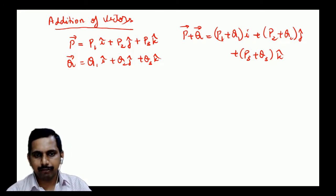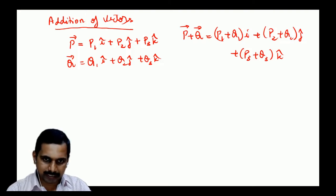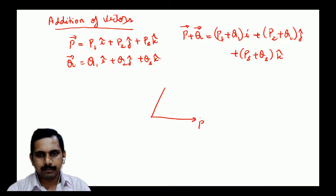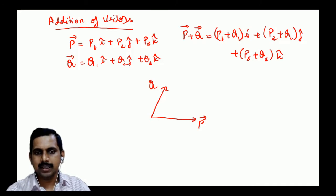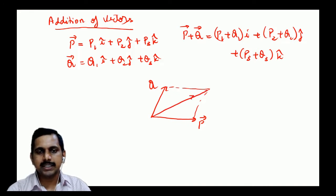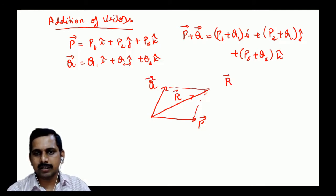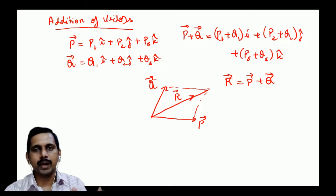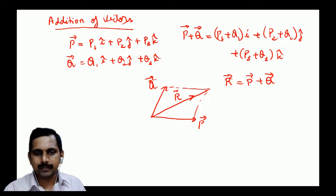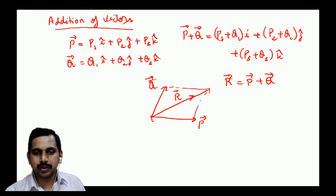If P and Q are represented as two sides of a parallelogram, then the diagonal represents the resultant R, which equals P plus Q. If you draw the figure to scale, you can find the resultant both in direction and magnitude.